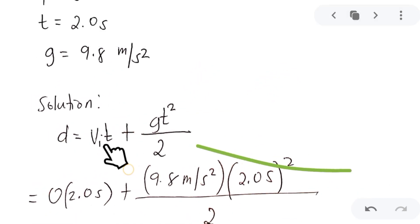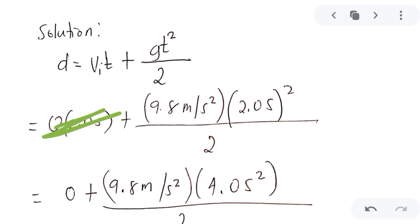You will have here the initial velocity is zero. Time is 2.0 seconds. So automatically zero na yan. And then you will have here the acceleration due to gravity is 9.8 meters per second squared. Time is 2.0 seconds. And then that will be raised to 2 over 2.